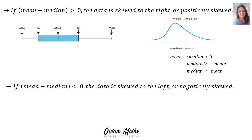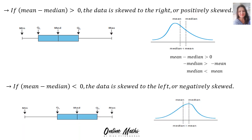If mean minus median gives an answer smaller than 0 (negative), then the data is skewed to the left, or negatively skewed. On the box and whiskers diagram for negatively skewed data, the mean is on the left-hand side and the median on the right-hand side — meaning the median is greater than the mean.